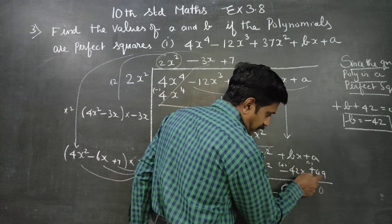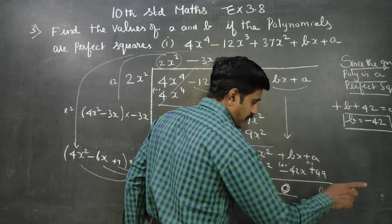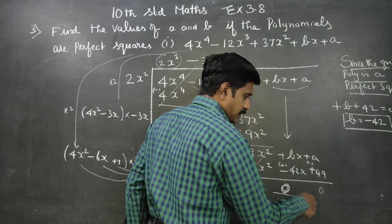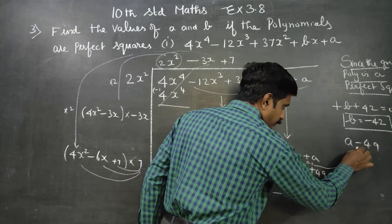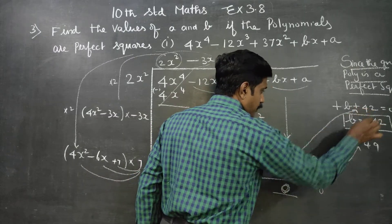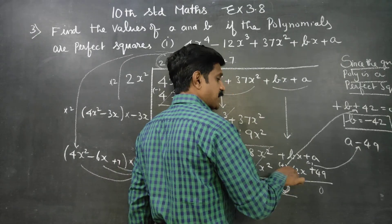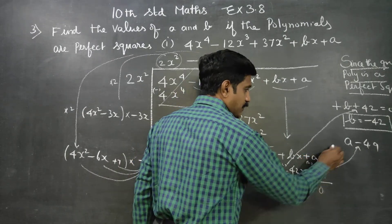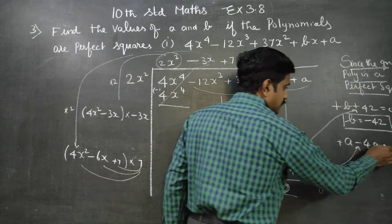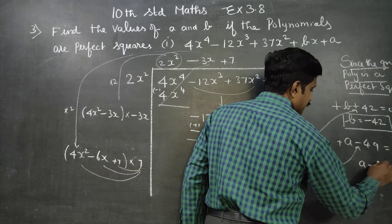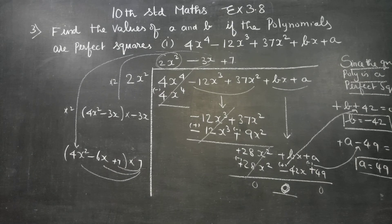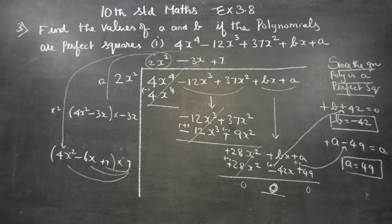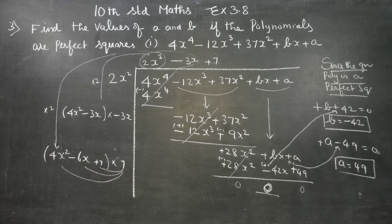A equals 10 symbol, minus 49 equals 0. Therefore A equals 49. And B equals minus 42. These will be your final answers: A equals 49 and B equals minus 42. Thank you.